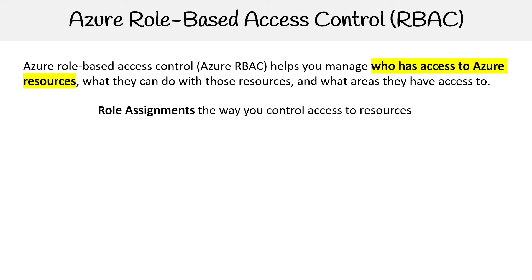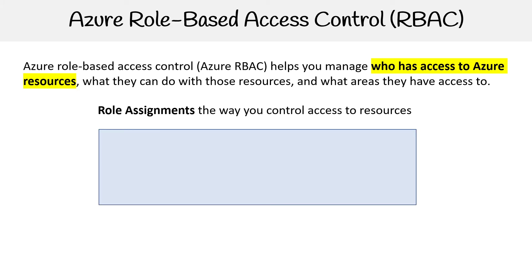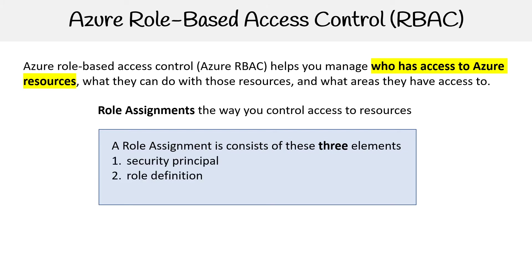The idea is that you have a user and you want to assign them a role, so you use a role assignment. A role assignment is made up of three elements: the security principle, the role definition, and the scope. We're going to look at those three things in a little bit more detail.